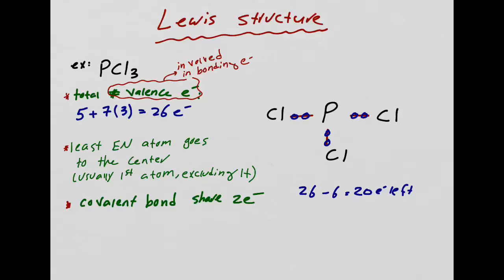The next step: you have to make sure the surrounding atoms are happy. This Cl has two electrons — it needs six more to have eight. This Cl has two — needs six more. And this Cl has two — needs six more. So I add six electrons to each Cl: one, two, three, four, five, six on each. Now each Cl has eight and is happy.